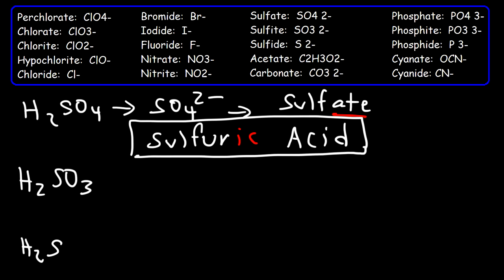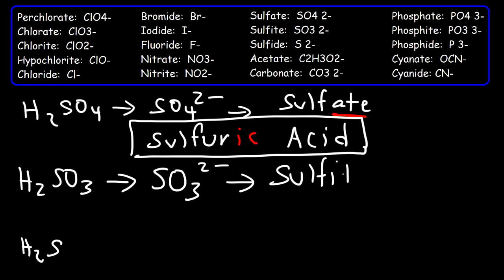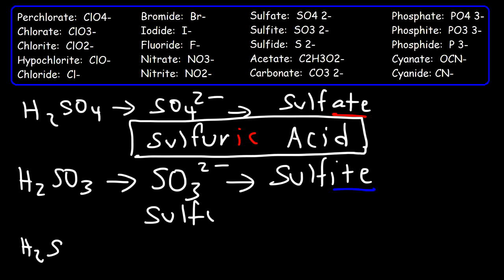Based on what you've seen, what do you think the names of the remaining two acids will be? For H2SO3, removing the two hydrogen atoms gives us the ion sulfite. We replace '-ite' with '-ous', but like the first example we write the element name first — sulfur — and add '-ous'. So this is called sulfurous acid.